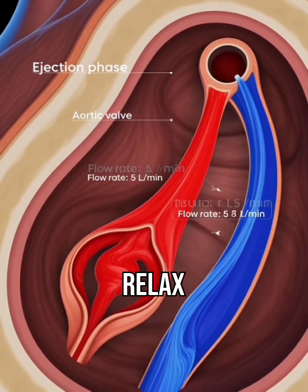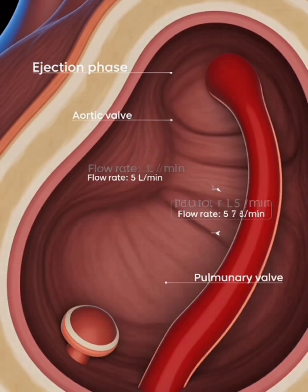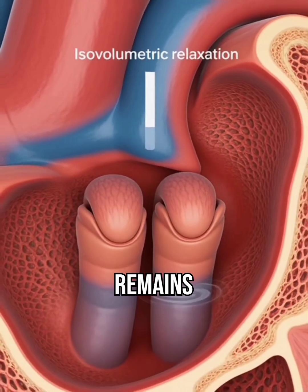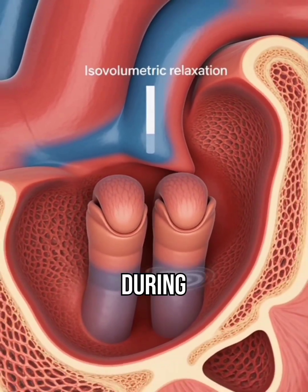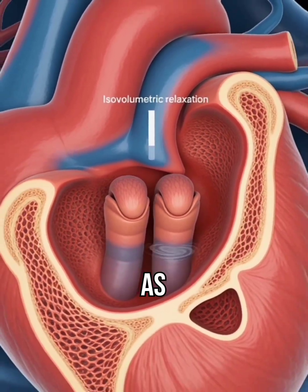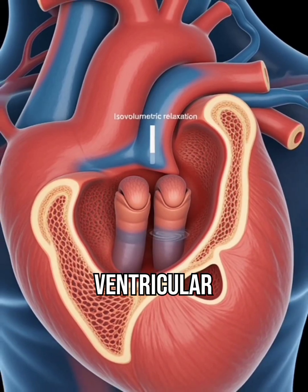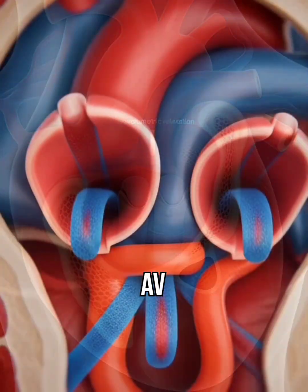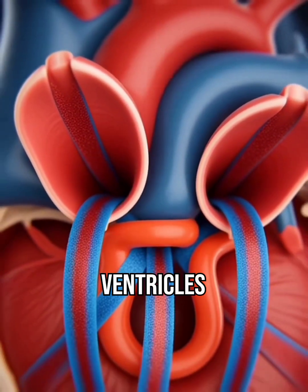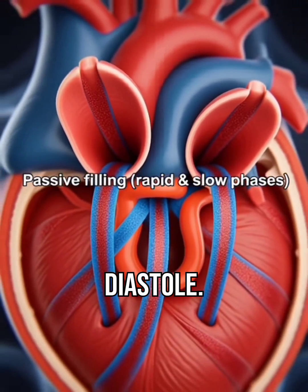Ventricles relax and semilunar valves close. Pressure drops while volume remains constant during early diastole. As atrial pressure exceeds ventricular pressure, AV valves open and the ventricles refill passively during diastole.